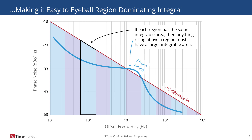We can use this knowledge to draw a minus 10 dB per decade line above our phase noise plot and lower it until it intersects and passes through the phase noise curve slightly. The region that it intersects first is going to be the region that dominates the integral by inspection, because it identifies the region of the phase noise curve that appears above the minus 10 dB line first and therefore includes more area underneath it.